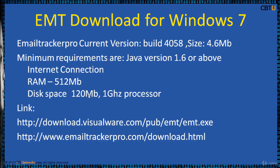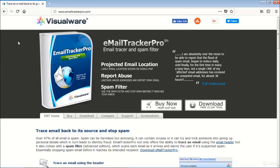The current version of Email Tracker Pro is 4058. The minimum requirements are Java 1.6 or above, 512 MB RAM, 120 MB disk space, and a 1 GHz processor.